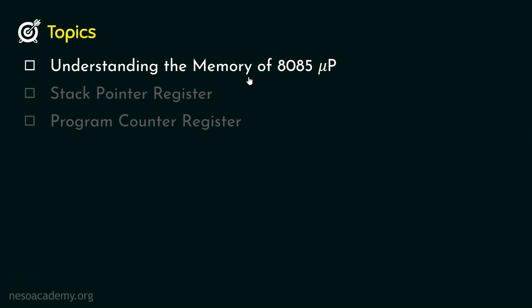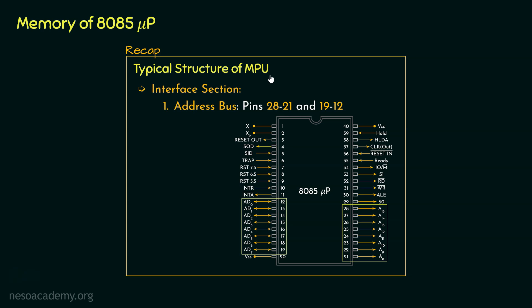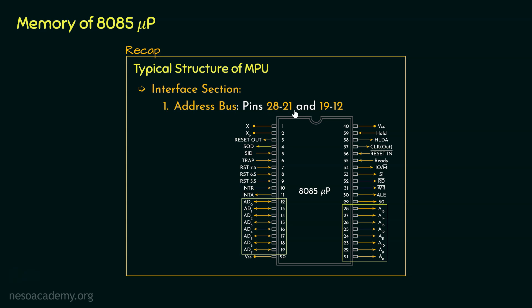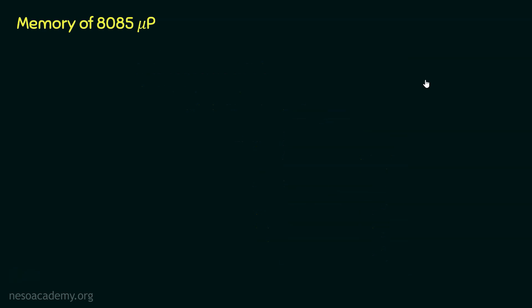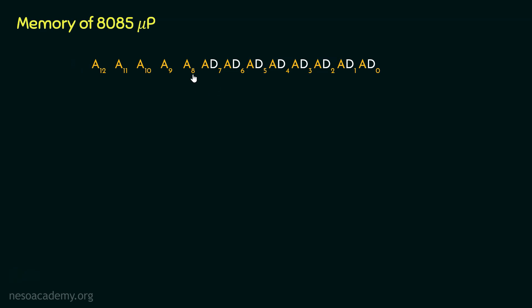Let's now understand the memory associated with the 8085 microprocessor. If you remember, in the session on the typical structure of MPU, we learnt about the interface section and the address bus. In the 8085 microprocessor, the pins 28 to 21 and 19 to 12 are the address bus. Pins 28 to 21 are A15 to A8, and pins 19 to 12 are AD7 to AD0. We are talking about 16 bits, where the lower order byte is AD0 to AD7 and the higher order byte is A8 to A15.